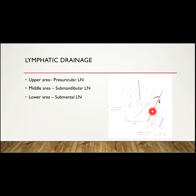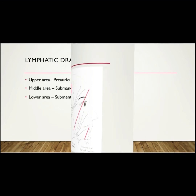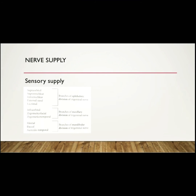Next is the lymphatic drainage, which is via three nodes. The upper area — the lateral part of the forehead, eyelids, cheeks, and parotid area — drains into the pre-auricular lymph node. The middle area, consisting of the middle part of the eyelids, forehead, external nose, upper lip, and cheeks, drains into the submandibular lymph node. The lower areas, consisting of the lower lips and chin, drain into the submental lymph node.